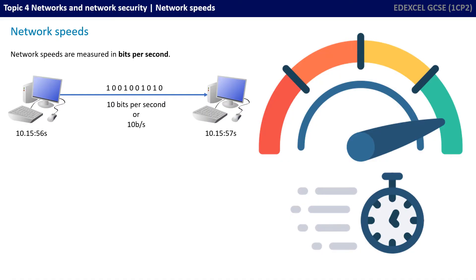Here we can see the source computer at 10, 15, and 56 seconds, sending 10 individual bits which arrive at the destination computer by 10, 15, and 57 seconds. This gives a transmission rate of 10 bits per second.